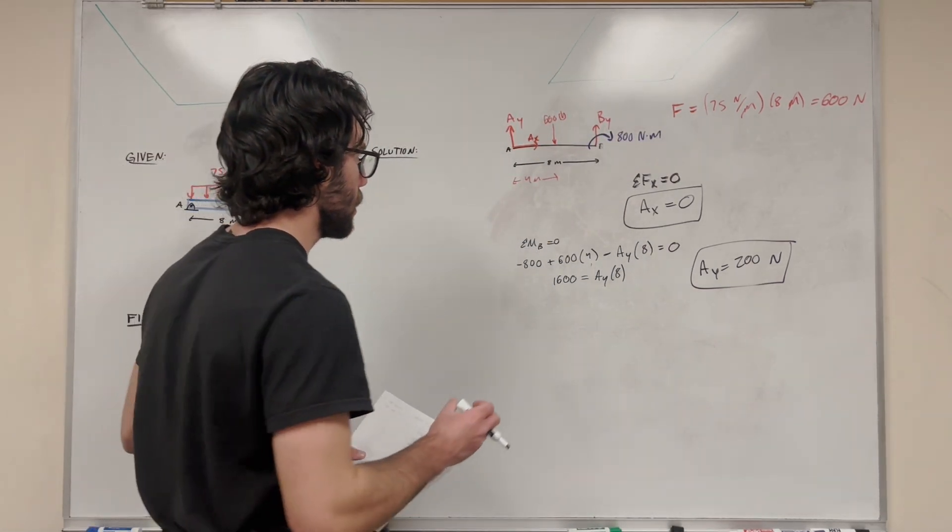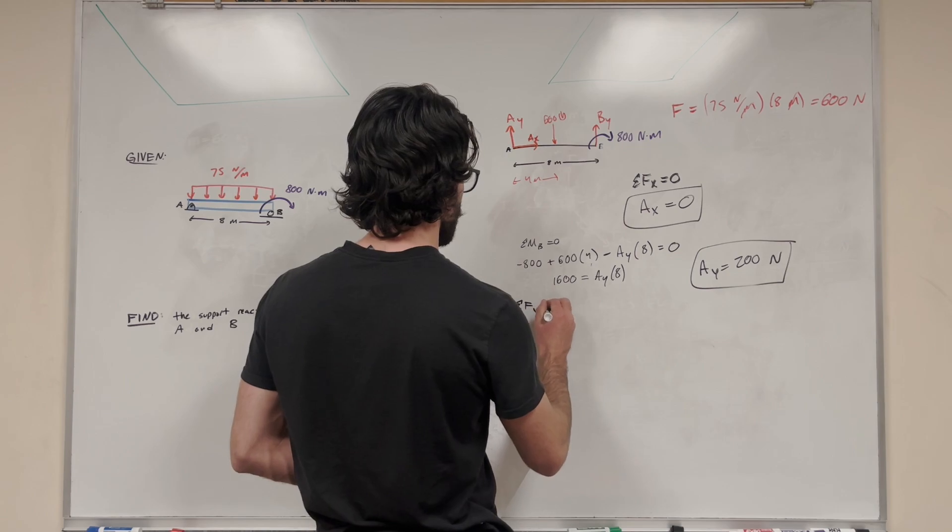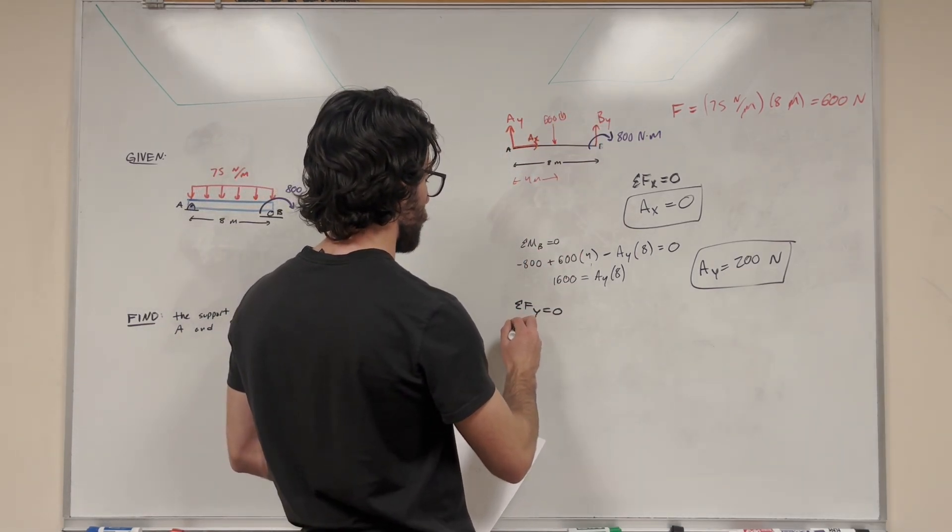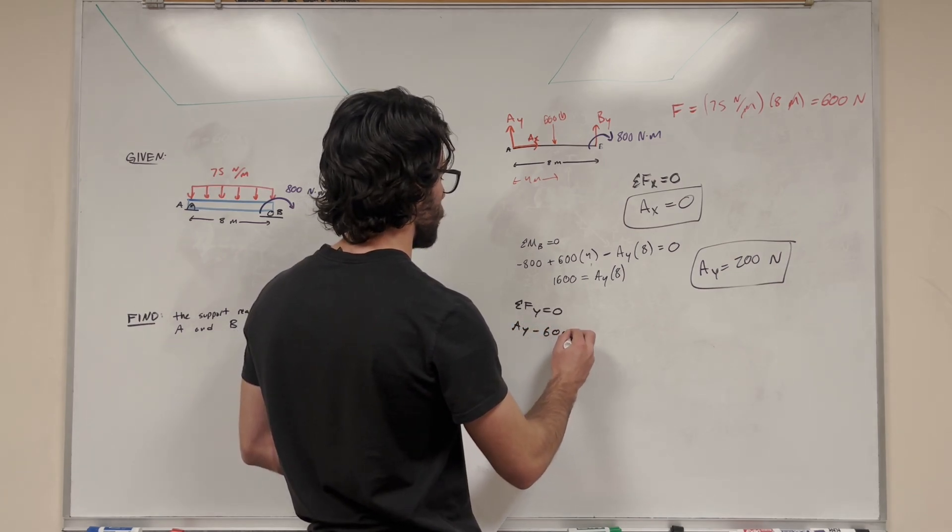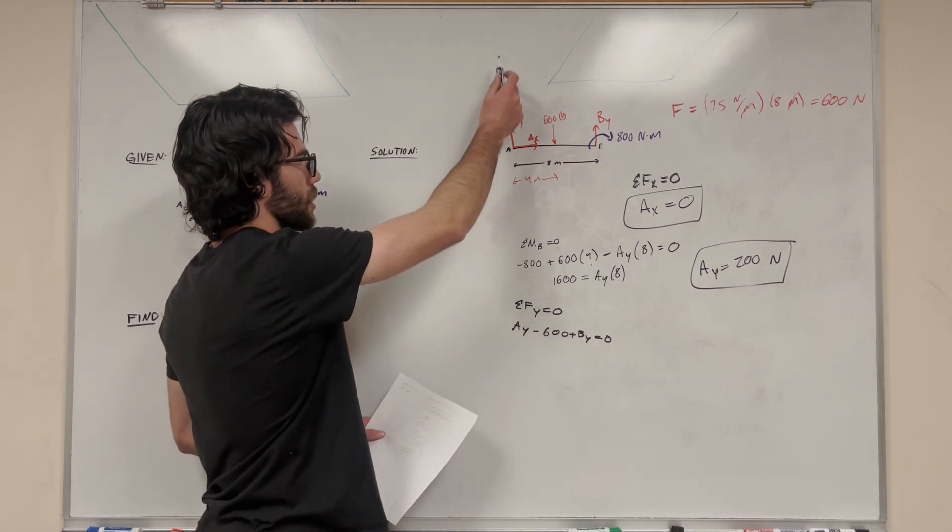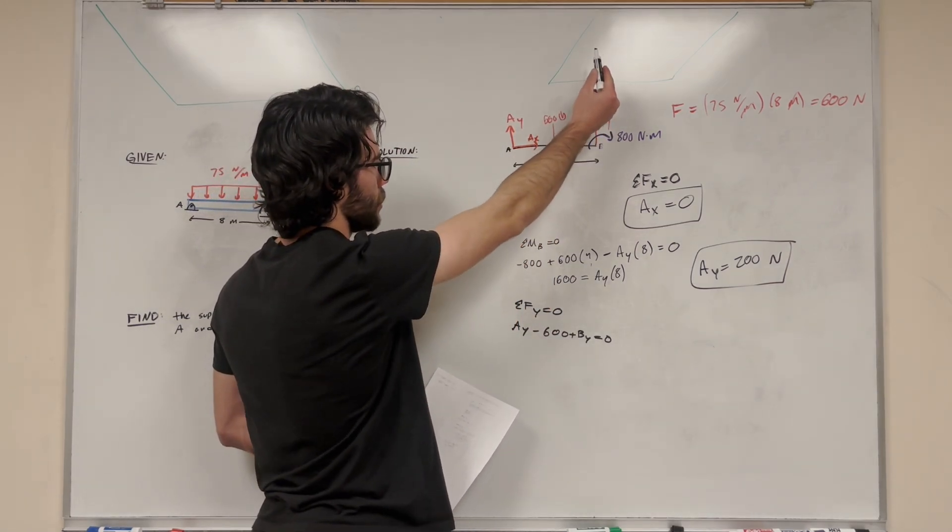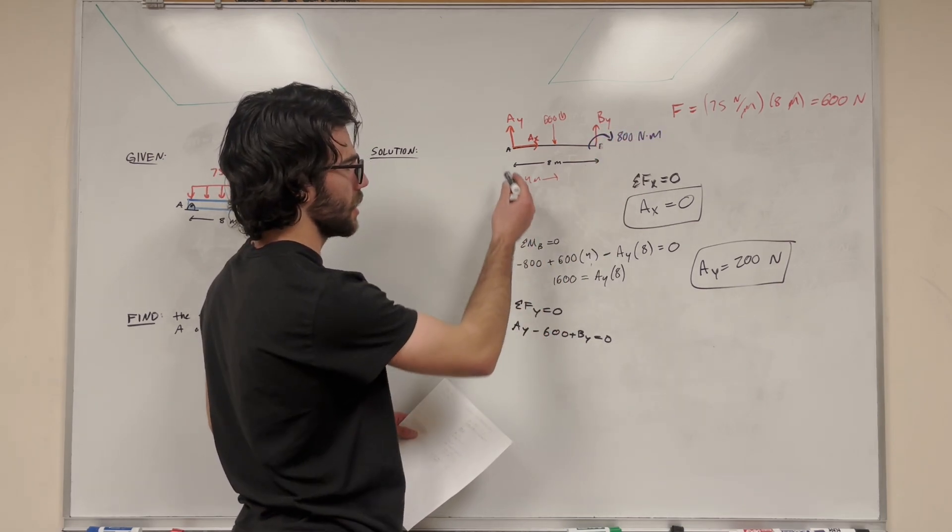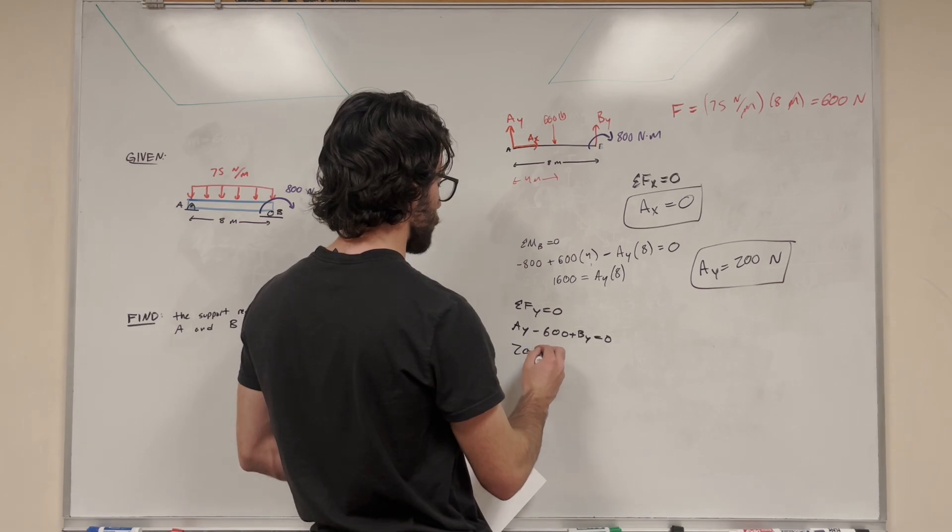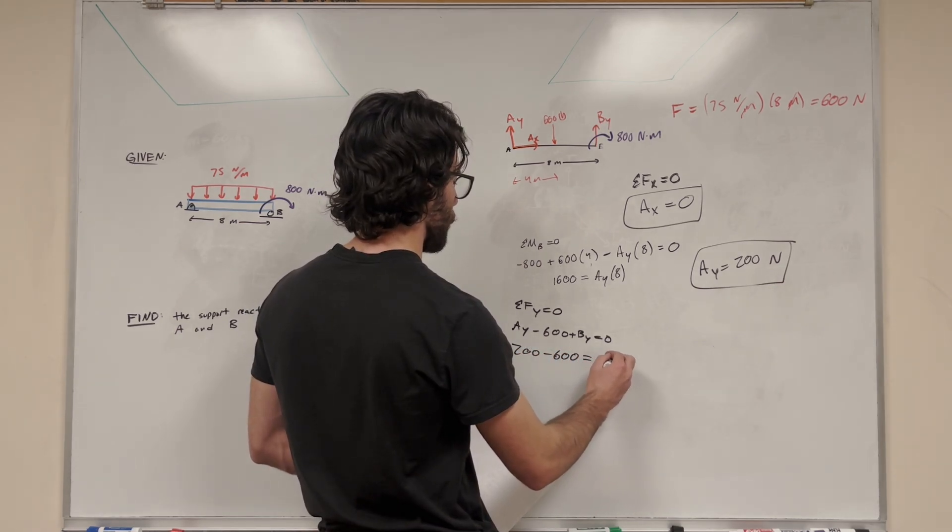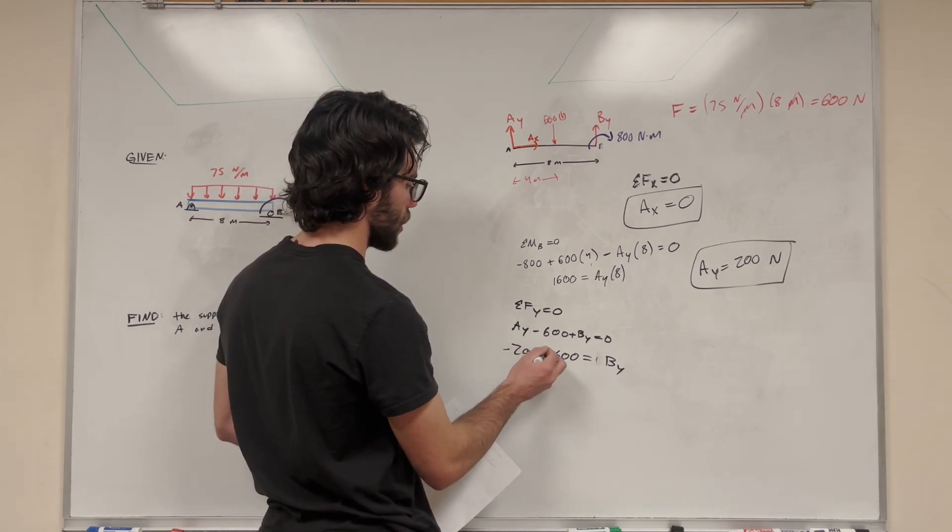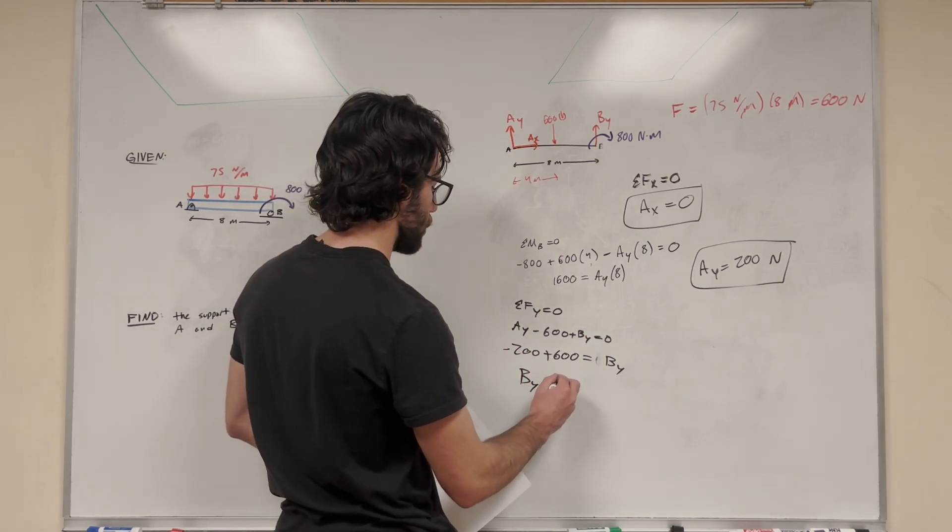Now B_y is going to be the easiest one next. We're just going to have to sum the forces in the Y direction. Now that we know one of these unknowns, we can solve the other ones really easily. So it's going to be A_y minus 600 plus B_y. So it's equal to zero. A_y is pushing up. 600 pounds pushing down. B_y is pushing up. The moment doesn't count in the sum of the forces, and A_x is not in the Y direction. So we can plug in that 200 for the A_y. So 200 minus 600 is equal to negative B_y. Subtract the B_y to the other side. And we can move it to the other side to get negative 200 plus 600. Of course, we'll find that B_y is equal to 400 newtons. There we go.